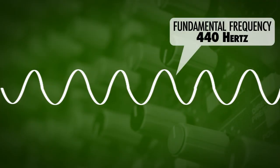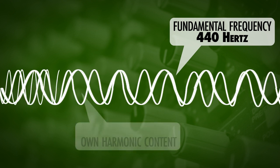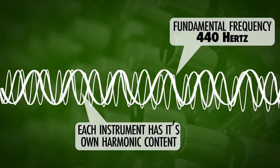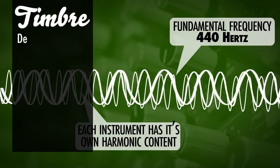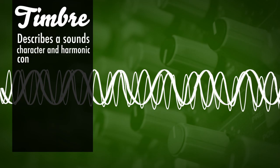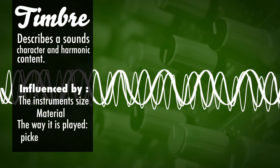That is because the fundamental frequency is 440 Hertz, but the character of an instrument is determined by the harmonics. The harmonics make up the timbre or the character of the sound, and that is different for a guitar than for a piano.